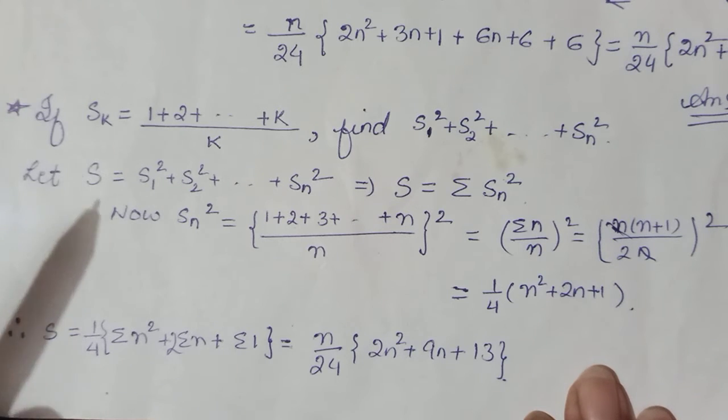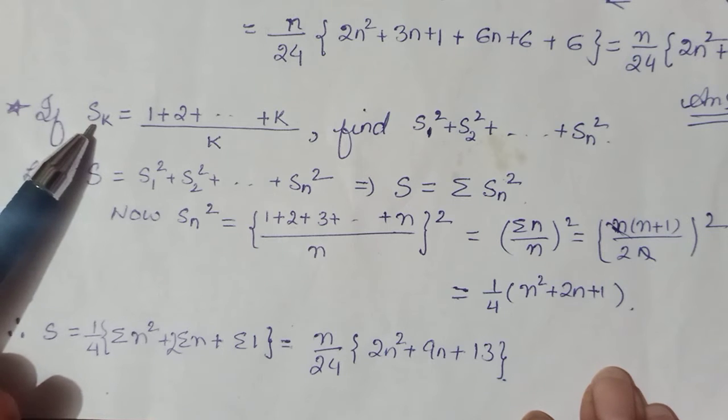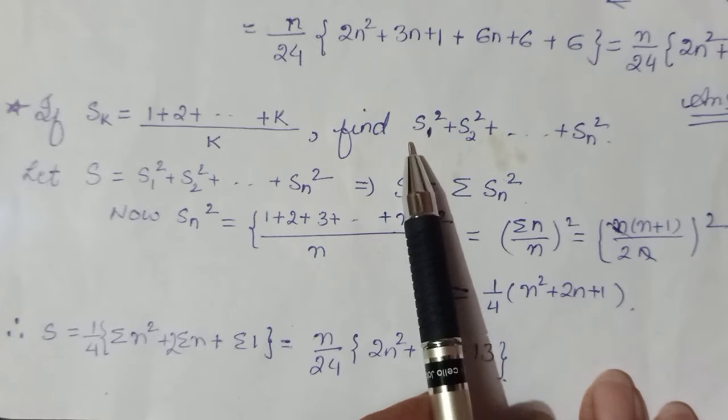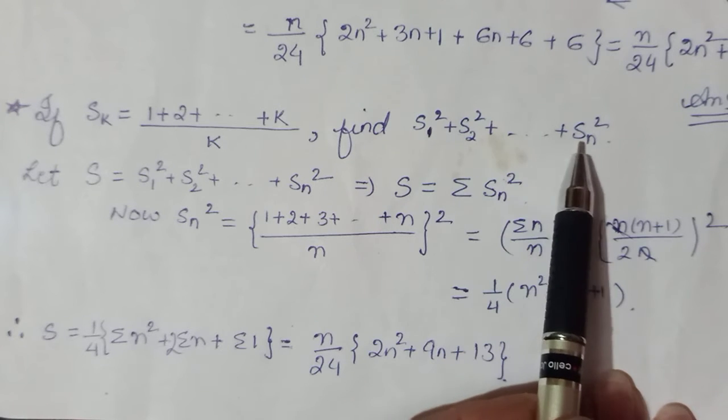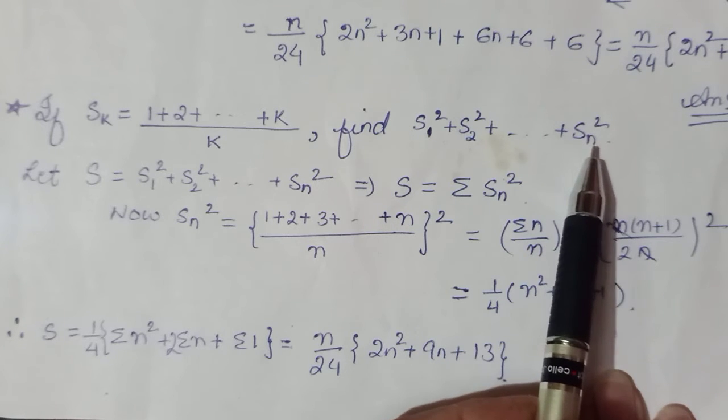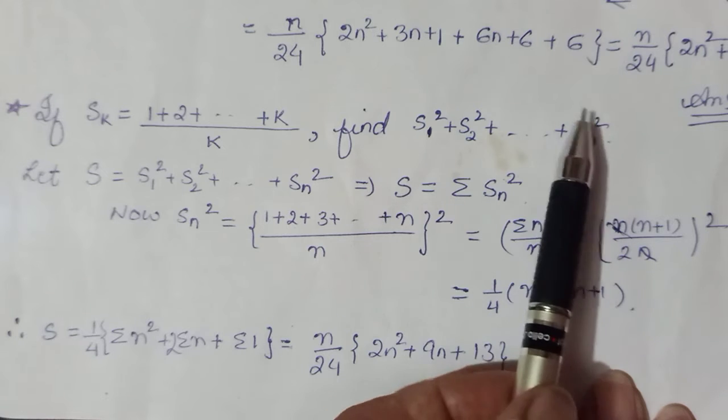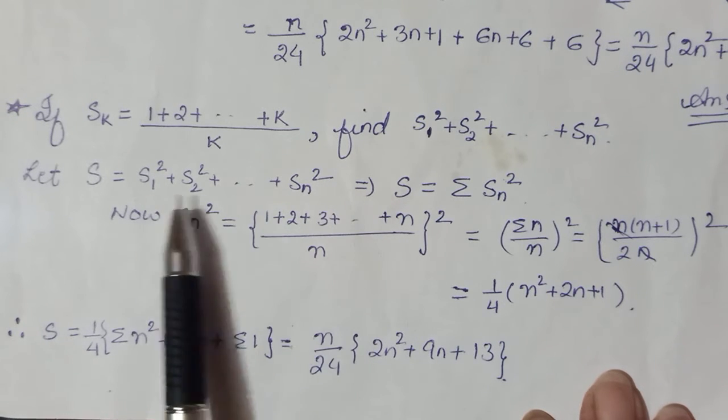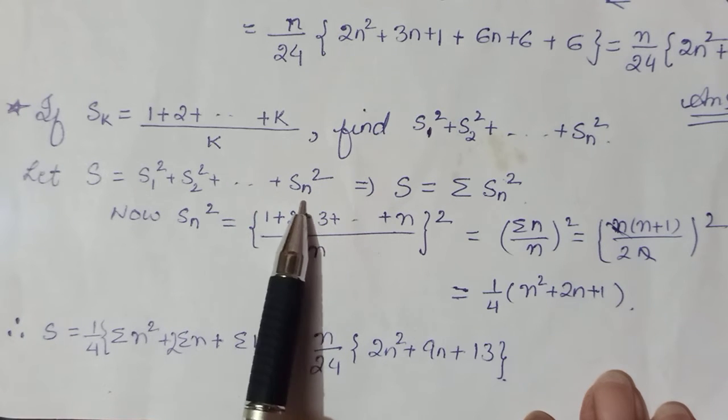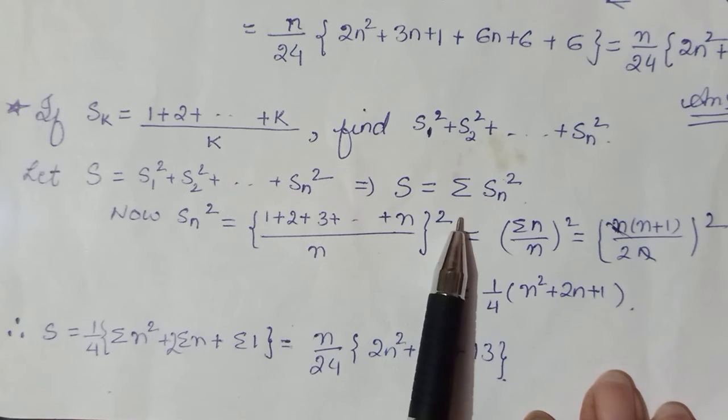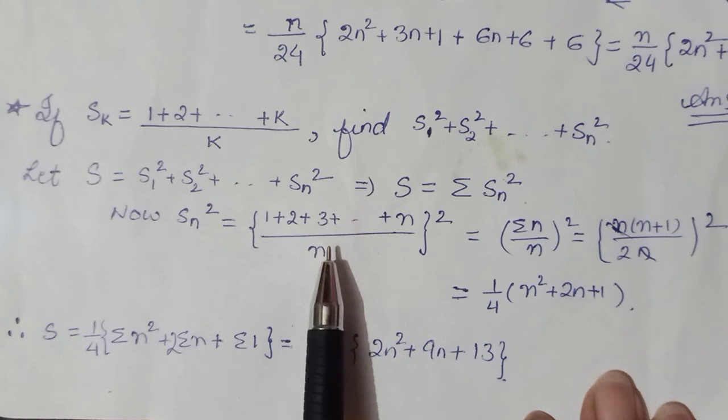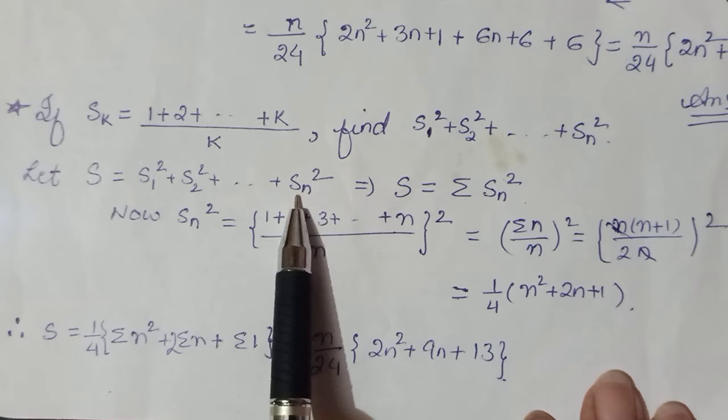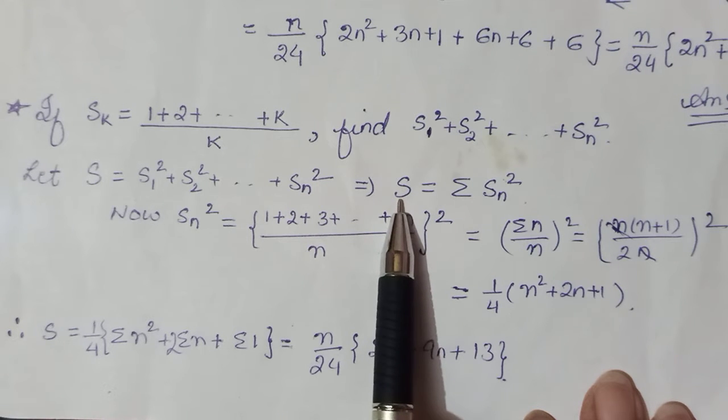Okay, next on line: you were given Sk is defined as (1 + 2 + ... + k)/k and you were asked to find S₁² + S₂² and so forth till Sn². Toh aapko is poori sequence ka sum karna hai. Toh pehle aapko, okay, sum of any sequence we know, sum of any sequence is putting its nth term to sigma notation. Toh pehle hamme is ka nth term work out karna padega.